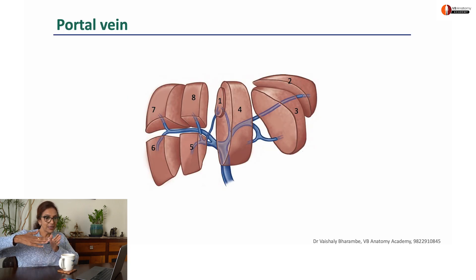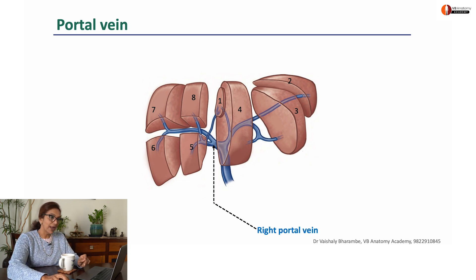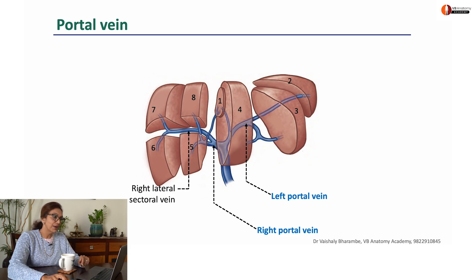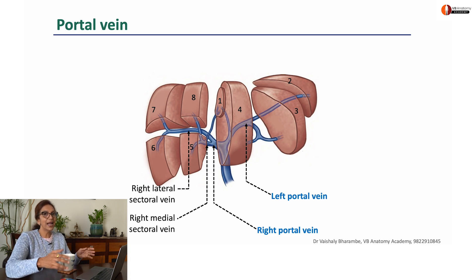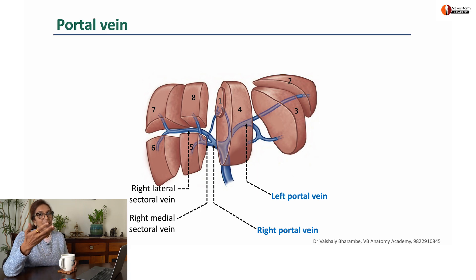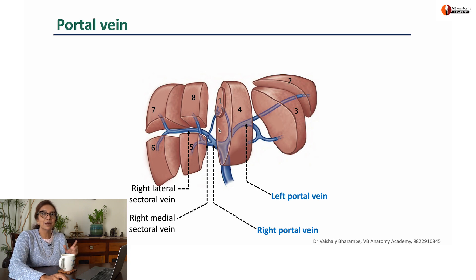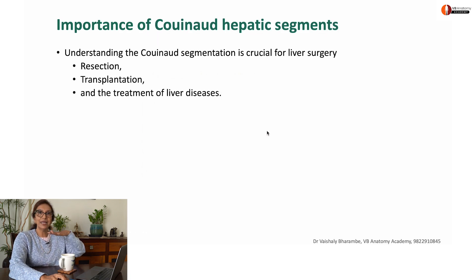What about the portal vein? As the portal vein enters through the porta hepatis, it divides into a right portal vein and a left portal vein — the left is a little higher than the right. The right portal vein then divides into a right lateral sectoral and a right medial sectoral vein. The right lateral sectoral supplies segments 6 and 7, the right medial sectoral supplies 5 and 8. You can see both branches supplying segment 1. The left goes on to supply segments 2, 3, and 4.